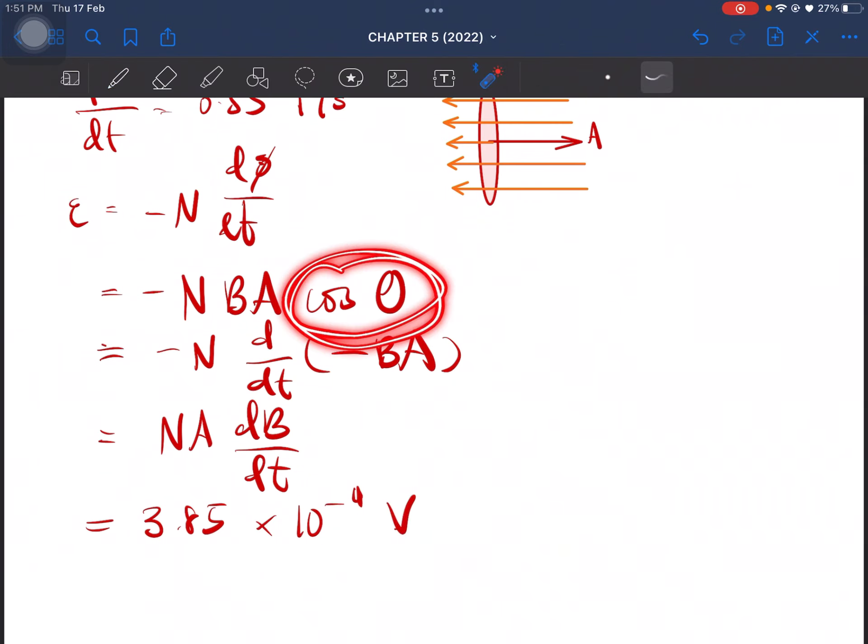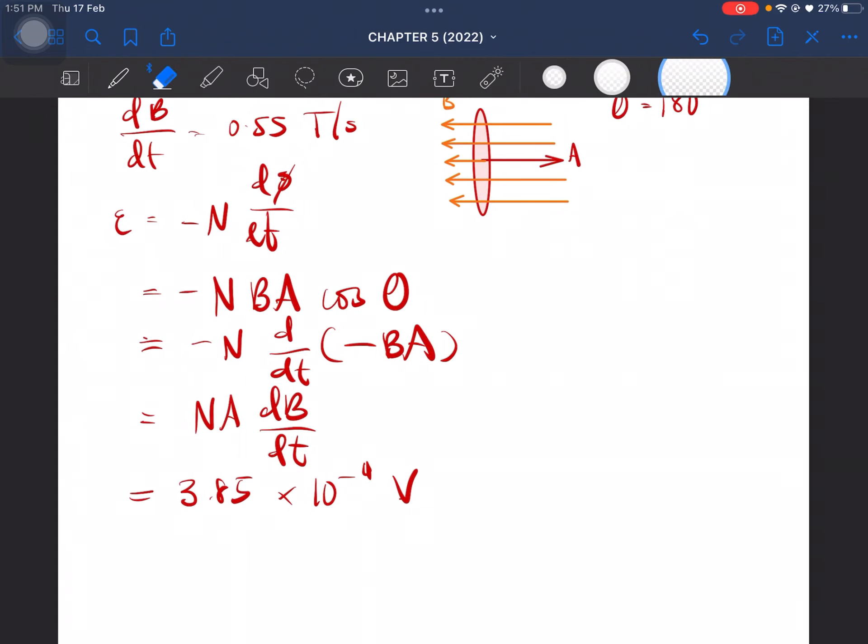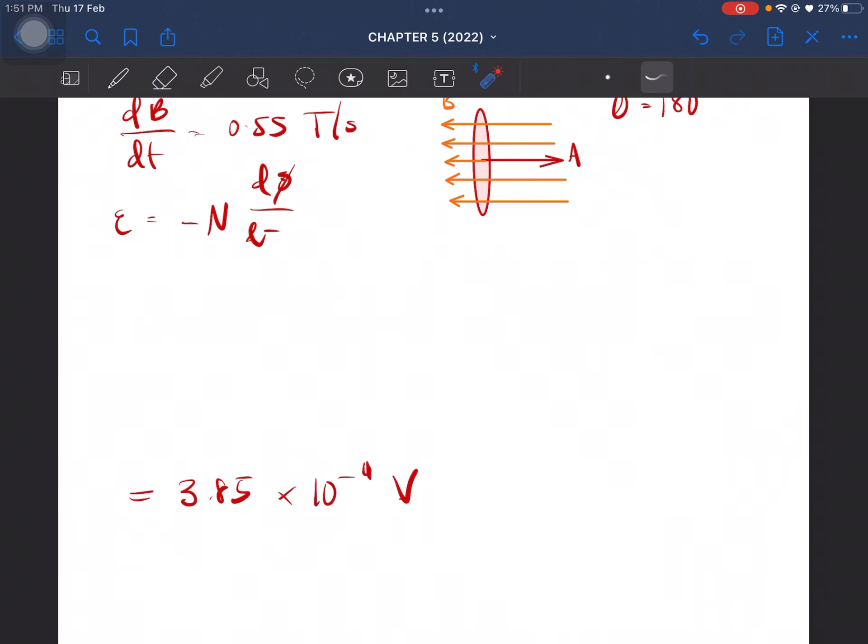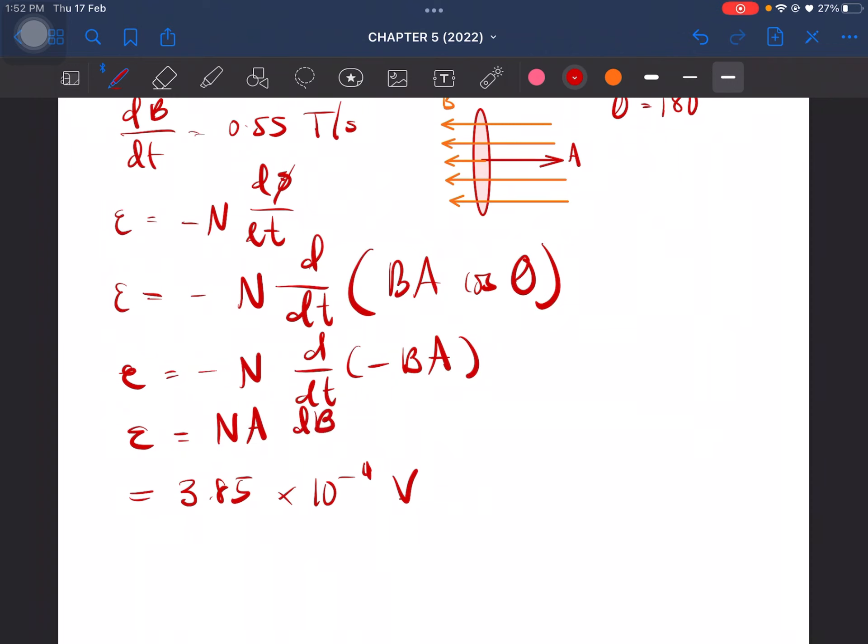Let me just redo that. So negative N, d over dt, this is BA cos theta. We are left with negative BA. So this is basically just NA dB over dt. They bring forward as constant, so we have DB over DT. The negatives cancel because this is negative and this is negative. The induced EMF is then 3.85 times 10 negative 4 volt.